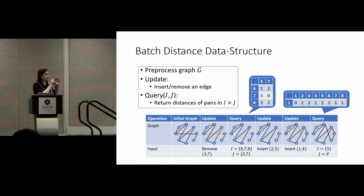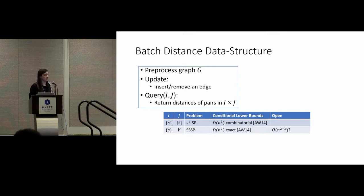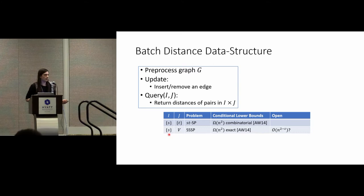This seems like an unusual model, but it's actually a generalization that captures many important problems. For example, if you want to maintain ST distance, we pick S as our set I and T as our set J, and then we get the ST distance. Likewise, if you want to maintain single source distances, we just pick our single source as our set I and all the other nodes as J. Single source distances are actually one of the major open problems in the area of graph data structures.